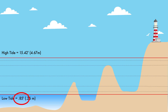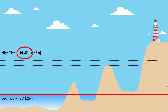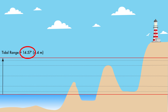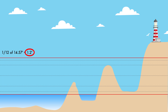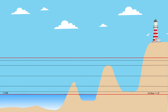Here we see a low tide of 0.85 feet and a high tide of 15.42 feet. This gives us a tidal range of 14.57 feet. One twelfth of that is 1.2 feet. So the way the rule works is that the tide will rise or fall 1 twelfth in the first hour.